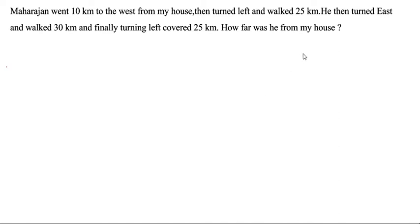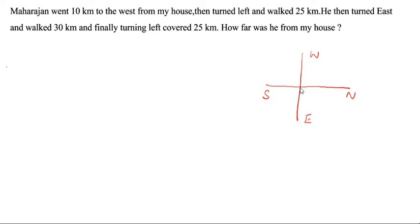First we have to draw the directions — north, south, west, east. 10 km to the west from my house, so west means here. So 10 km — this is the house, the starting point. Then he turned left and walked 25 km.